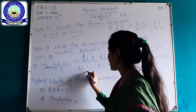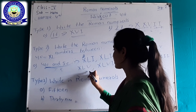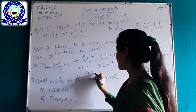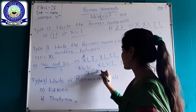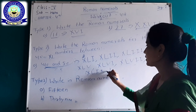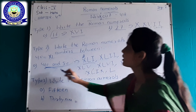And XLIX for 49, and L for 50. This is your counting in Roman numerals between 40 and 50.